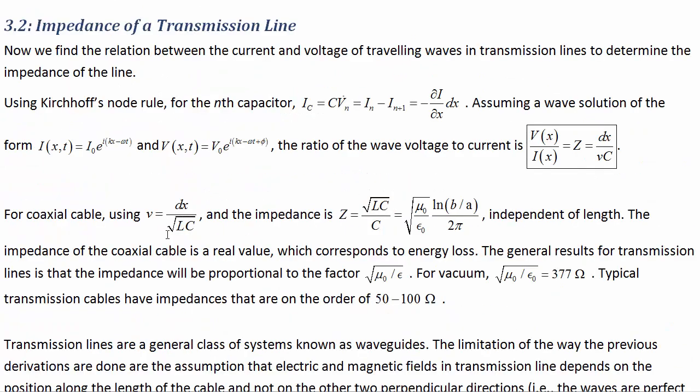3.2 impedance of a transmission line. Now we can calculate an impedance of the cable if we divide the voltage of the propagating wave by the current of the propagating wave. Doing that we come up with an impedance using the information from the last section of root mu naught over epsilon naught ln b over a divided by 2 pi. Mu naught and epsilon naught are the permeability and permittivity of free space respectively. B and a were the radii of the outer core and the inner core of the cylinder that make up the coaxial cable.